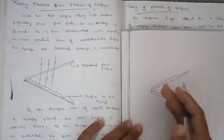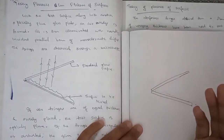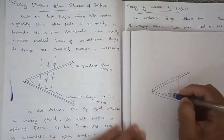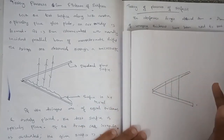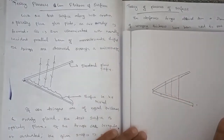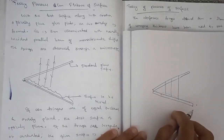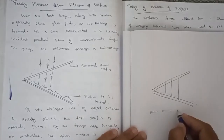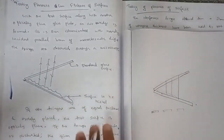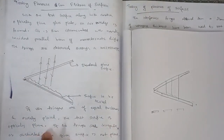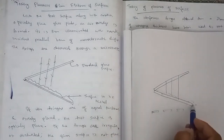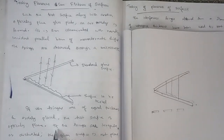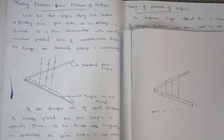If we test the surface by passing an incident parallel beam of monochromatic light, the interference fringes are of equal thickness and orderly placed. If the fringes are of equal thickness and orderly placed, the test surface is optically plain. If the fringes are irregular or disturbed, the given surface is not plain.